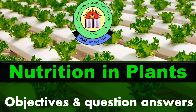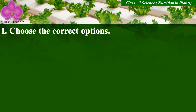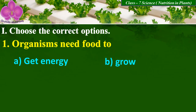Nutrition in Plants, Class 7 Science exercises. First question: choose the correct option. Organisms need food to — option A: get energy, B: grow, C: maintain health, and D: all of these.